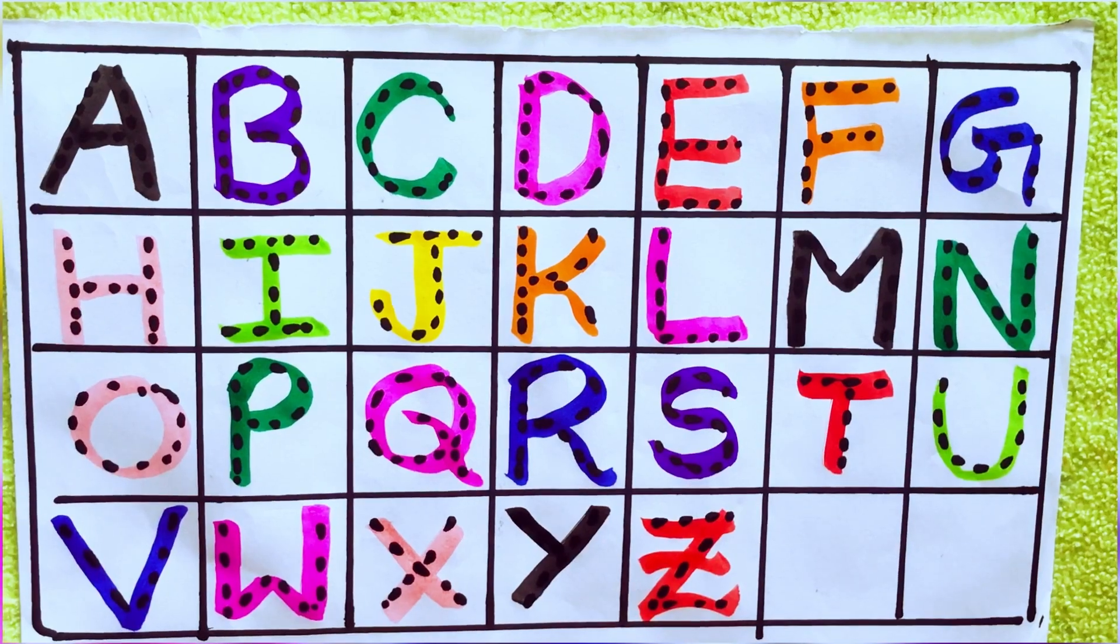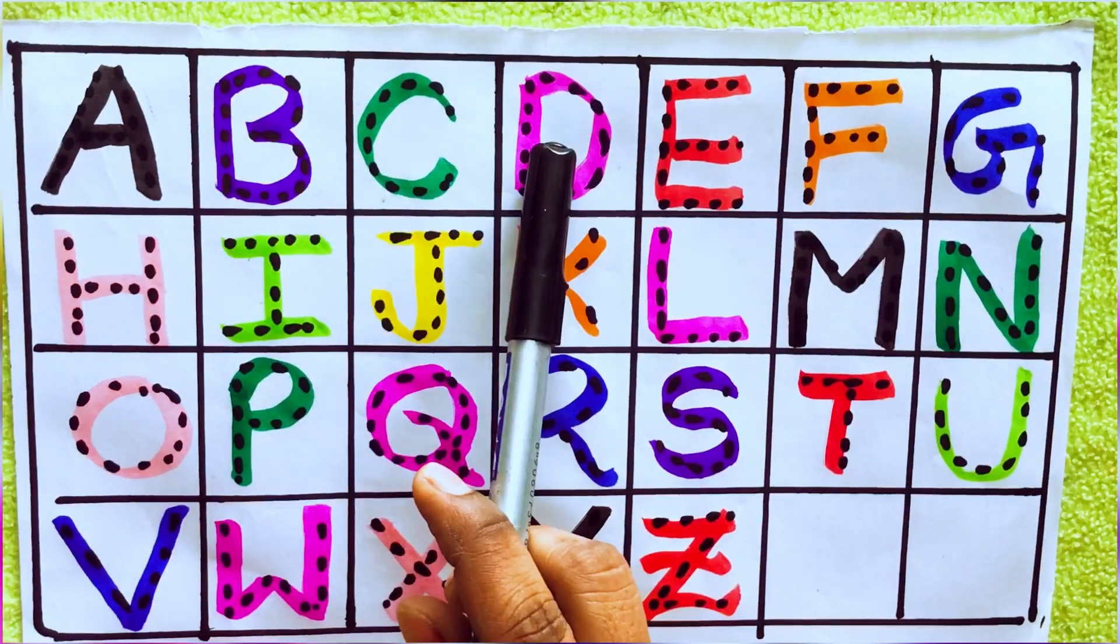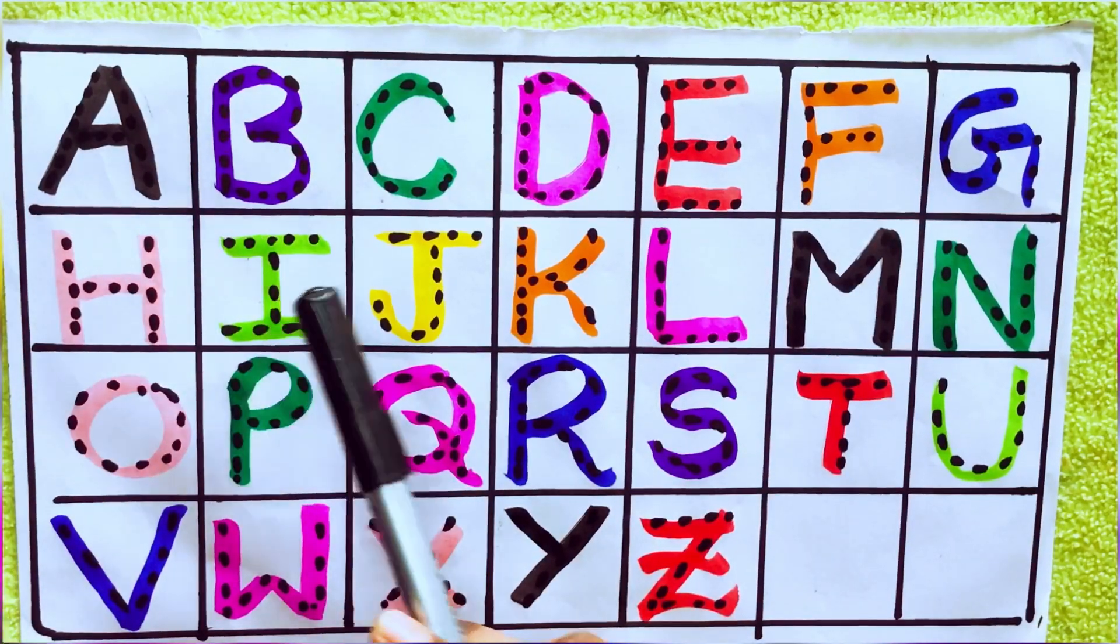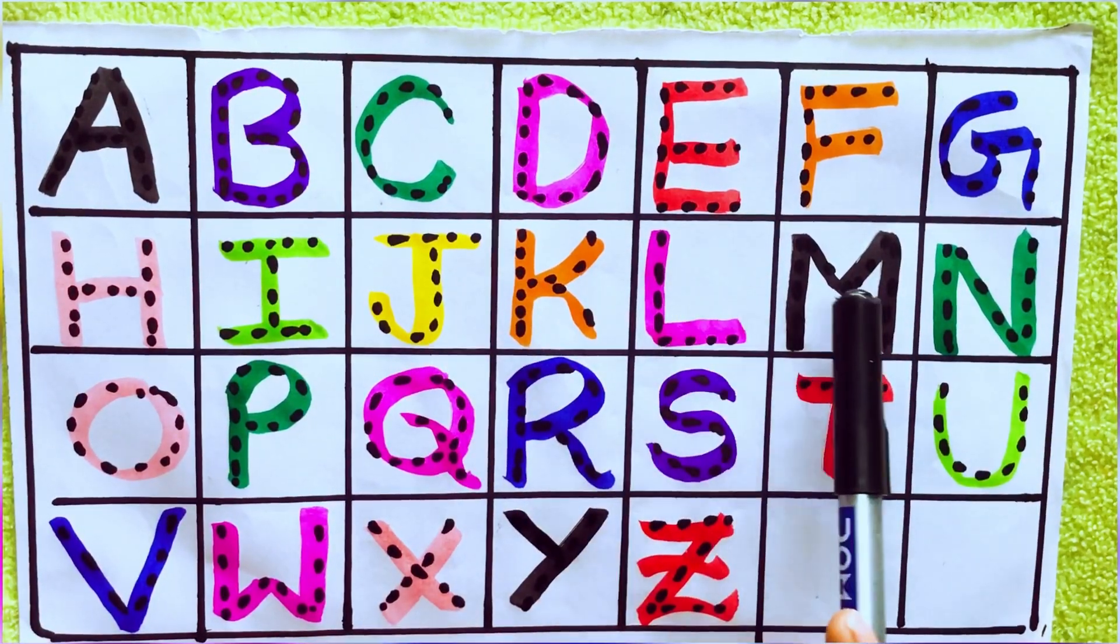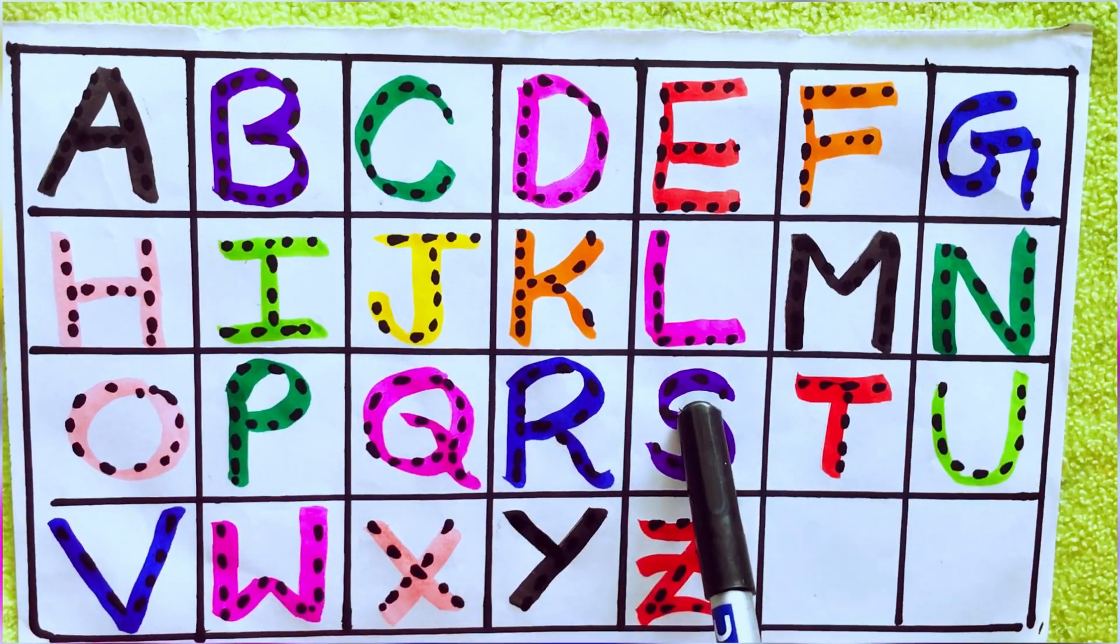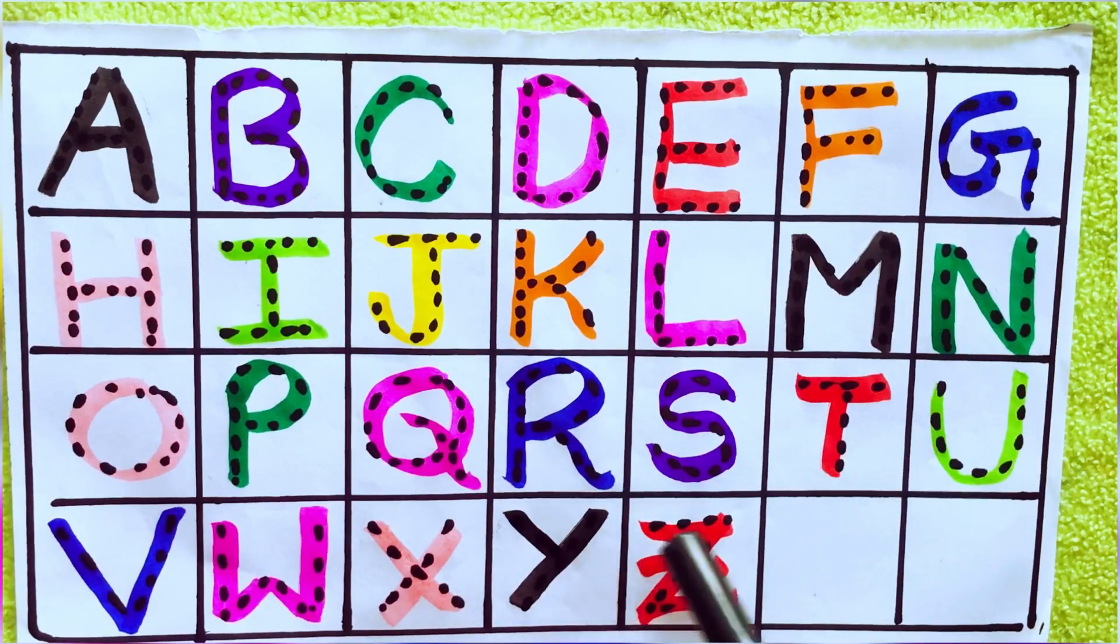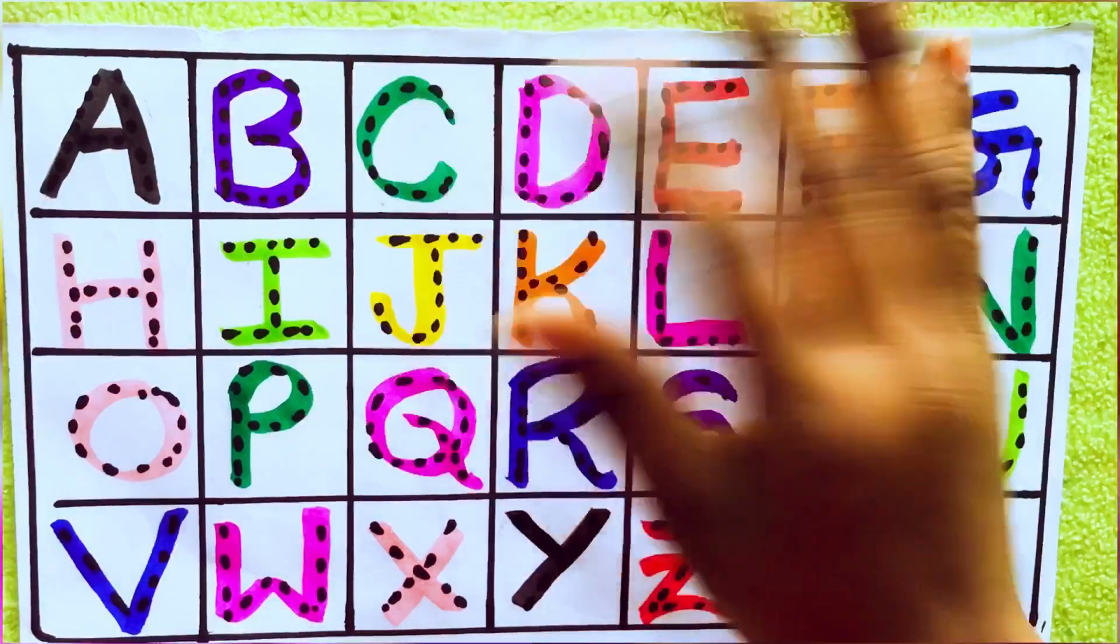One second learning alphabets: A, B, C, D, E, F, G, H, I, J, K, L, M, N, O, P, Q, R, S, T, U, V, W, X, Y, Z. Okay, bye kids.